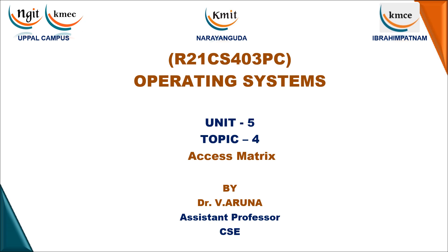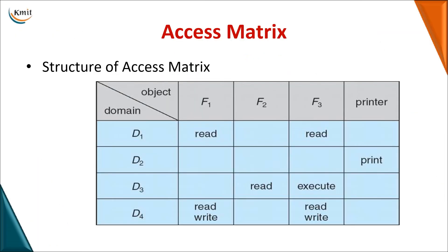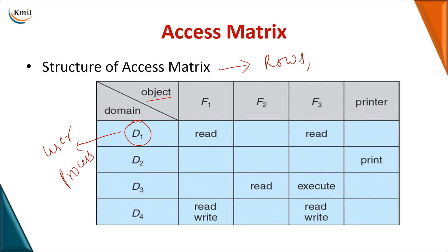The next topic in this operating system session is related to access matrix. In the previous session we already seen what is a domain. A domain represents a user, or it can be a process or any role. A process will be executed by a particular user, so this can be even a process. The other value here will be an object. A matrix is a combination of rows and columns.